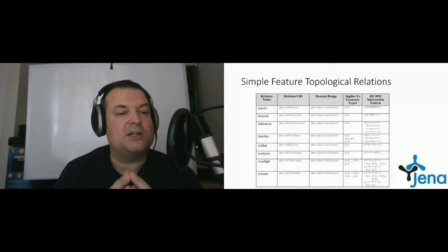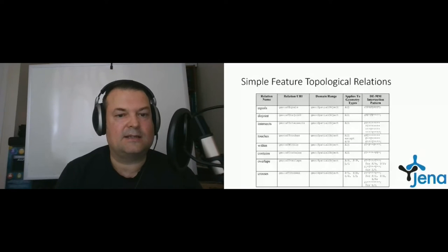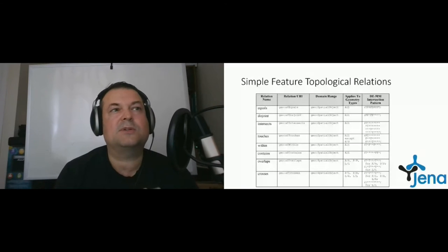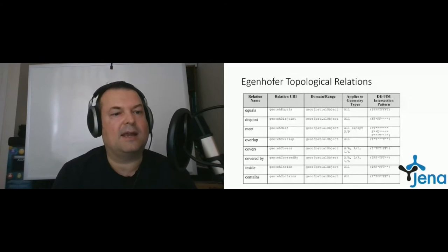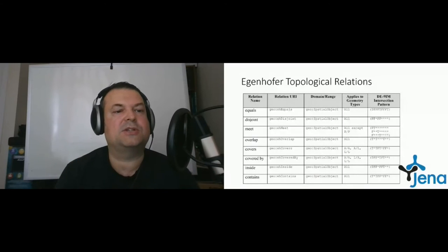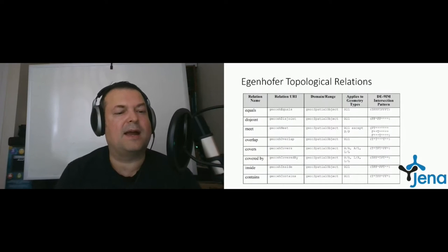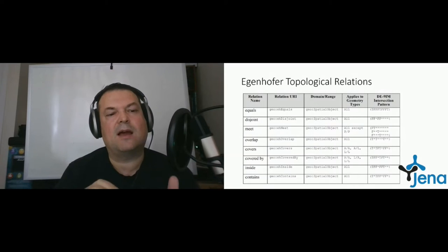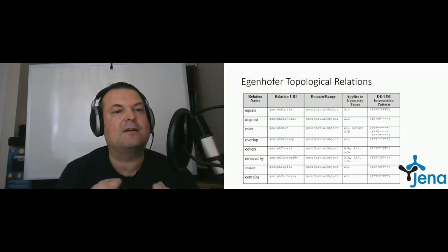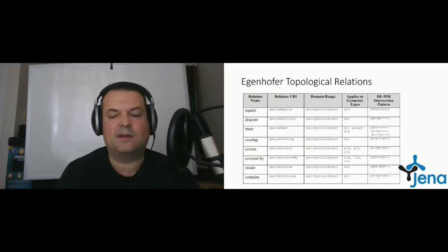The next family is the Egenhofer topological relationship, which is quite similar to Simple Features. It has the basic relationships: equals, disjoint, meet, overlap, covers, covered by, inside, and contains. As you can see, it doesn't have intersects, but that can be replaced by another relationship. So there are minor differences between these families.